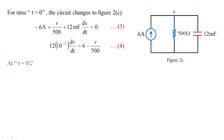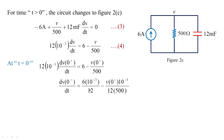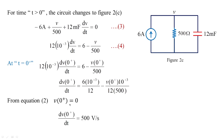At t=0+, substituting into equation 4 to find dv/dt(0+): the term v(0+)/500 = 0 since v(0+)=0. So dv/dt(0+) = 6 / (12×10⁻³) = 6 × (10³/12) = 500 volts per second.